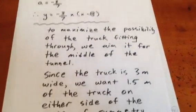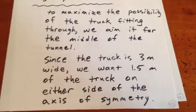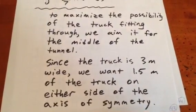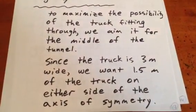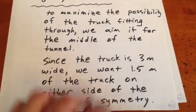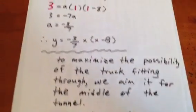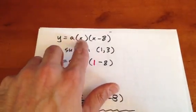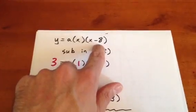Now to maximize the possibility of the truck fitting through, we have to aim it for the middle of the tunnel. And since the truck is 3 meters wide, we want 1.5 meters of the truck to be on either side of the axis of symmetry. Well, if we have zeros at 0 and 8, the axis of symmetry will be at 4.